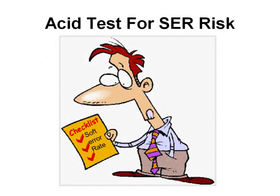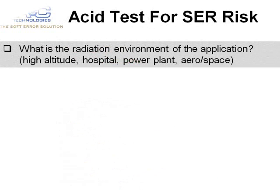Let's go through a quick assessment to check if our device could be at risk. The following checklist represents typical points to investigate when assessing the level of risk. First, our application and the environment in which it operates. We have to check the radiation environment of our final application, as some environmental factors are a cause of increasing soft errors in electronic devices.